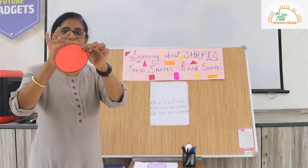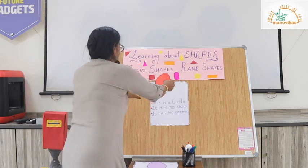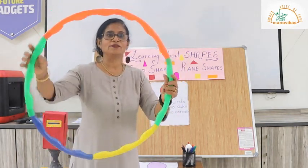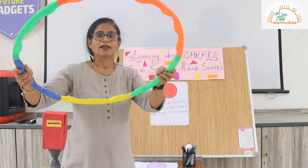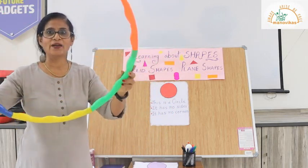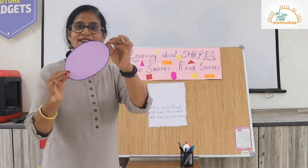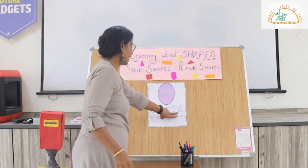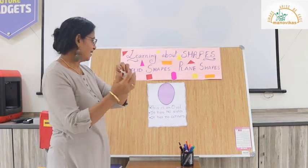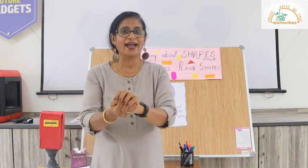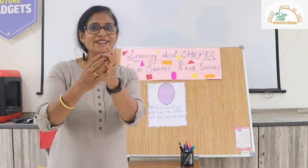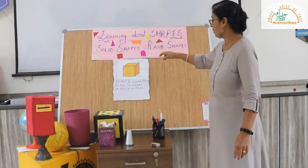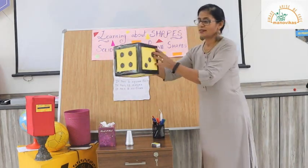Our next plane shape is a circle. A circle has no sides and no corners. Here is an example of a circle — it's a hula hoop which you can play with. Can you guess this plane shape? This is an oval. An oval also has no sides and no corners. I have something in my hand which is also oval in shape — it's an egg!